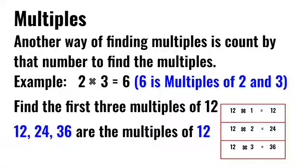Another way of finding multiples is count by that number to find the multiples. Example: 2 times 3 is 6. 6 is a multiple of 2 and 3.